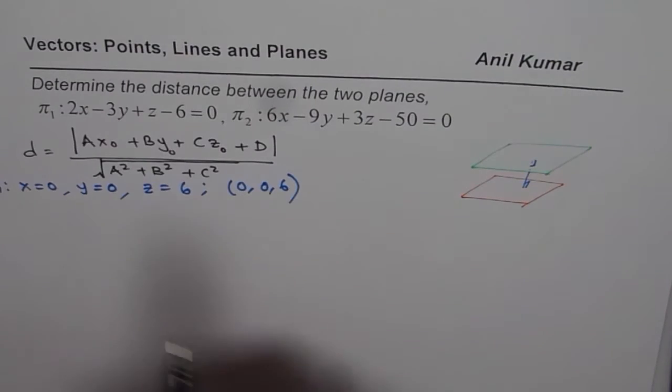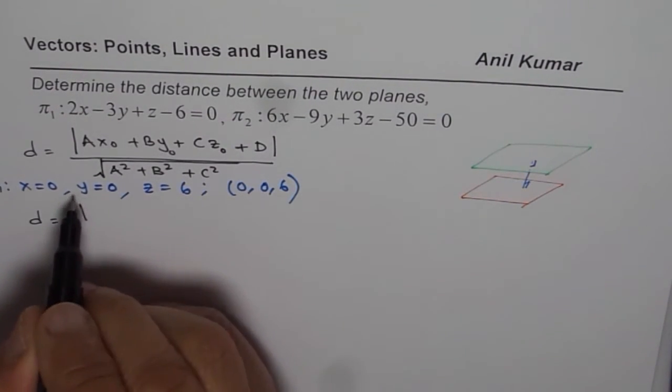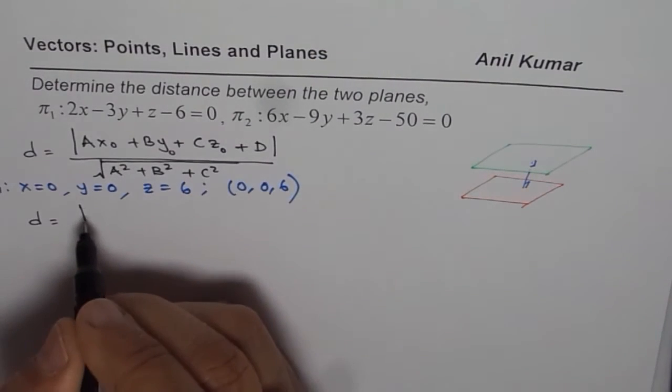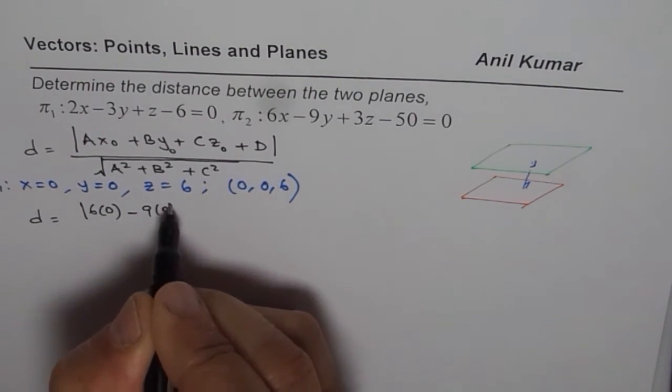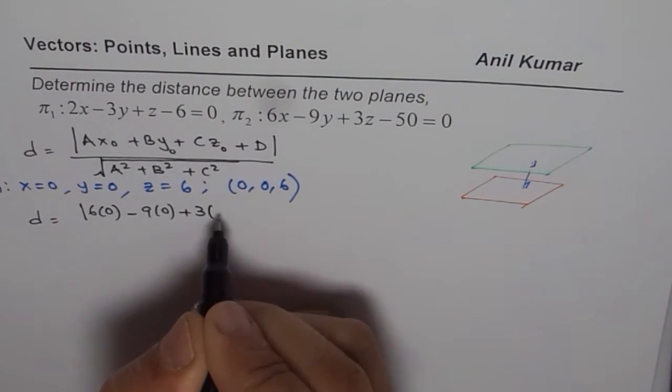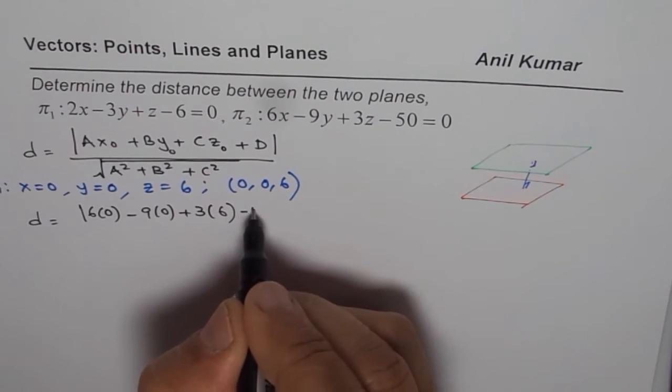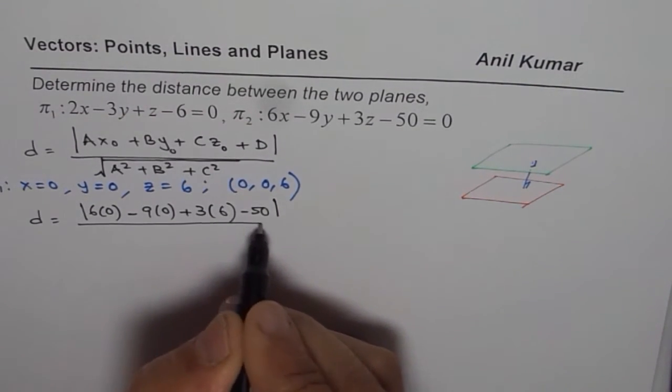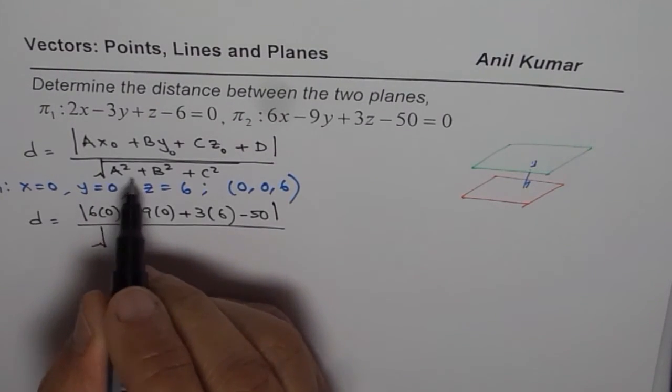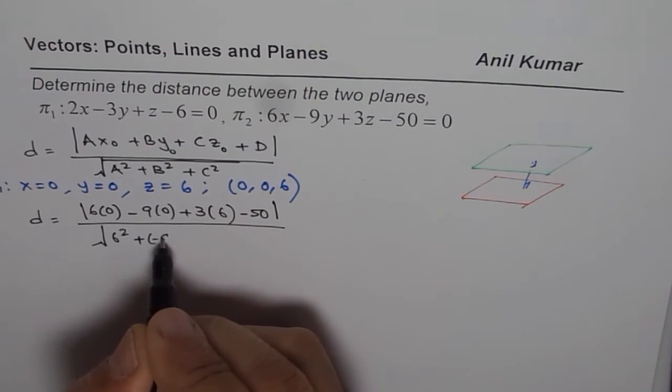So that's the strategy. So the distance will be absolute value: 6 times 0 plus -9 times 0 plus 3 times 6 minus 50, divided by √(a² + b² + c²) which is √(6² + (-9)² + 3²). So that is the distance.